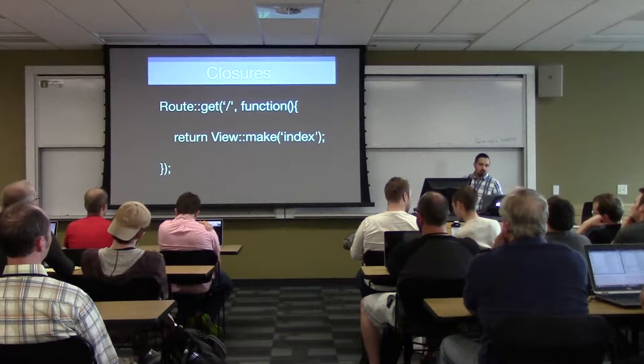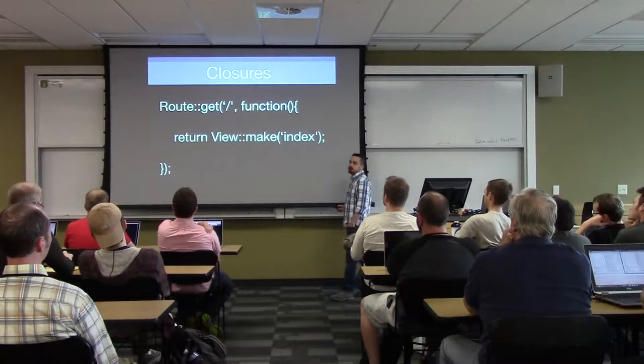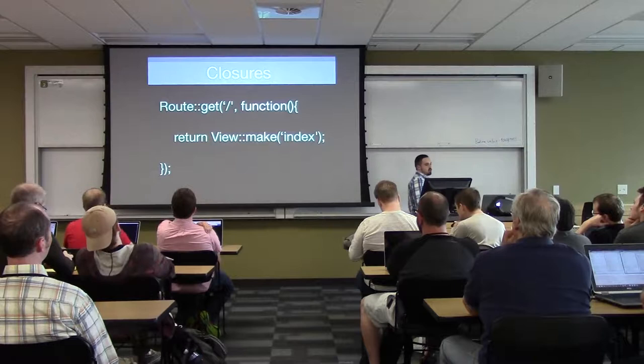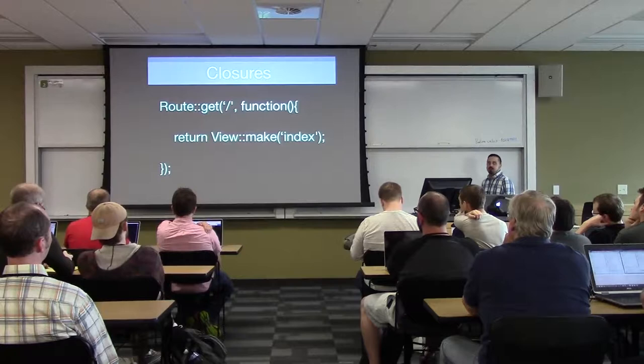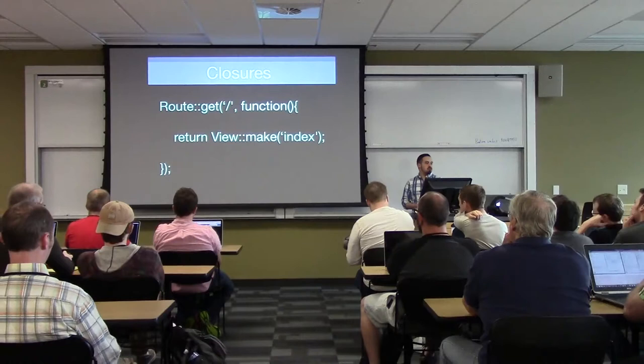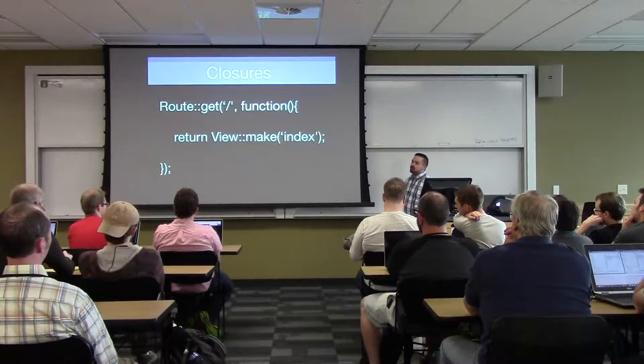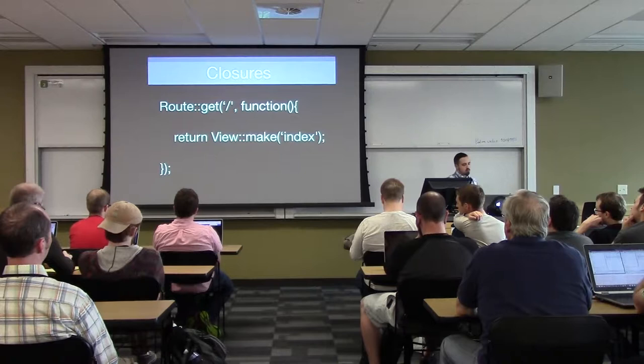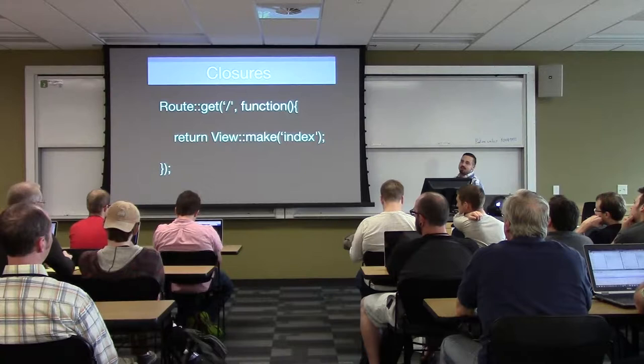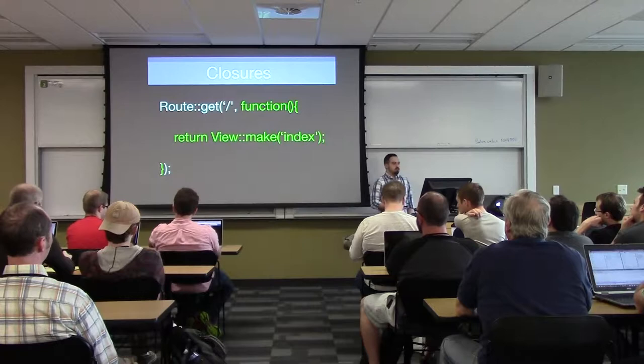Closures — you've probably seen these if you've used any JavaScript; that's what most people know them from if they don't have a CS background. A closure is an anonymous function that takes data in and acts on it. PHP got this in 5.3 or 5.4 — it's fairly new but not cutting edge at all. Here we're using an example with a Laravel-style route: we're doing a GET for the forward slash, which would be your default route, and then we're throwing in an anonymous function after that to act on it. Instead of a named function being passed as the second parameter, it's a function without a name.